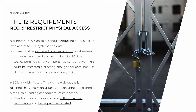Let's start with 9.1: enforcing entry controls. This is about controlling the entry of users with access to card data environment systems and data. You must either have cameras or access control — such as locked doors unlocked with biometrics — on all entries and exits, monitored and maintained for 90 days. If you have physical media with card data in one room, you need cameras or access control in that room. If you have card data in 20 rooms, you need this for all 20 rooms. You must store the data for 90 days.